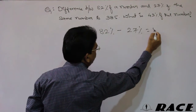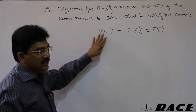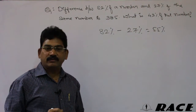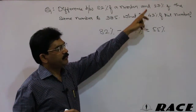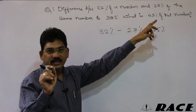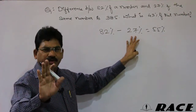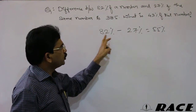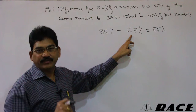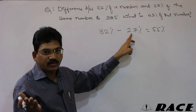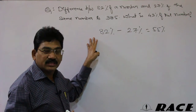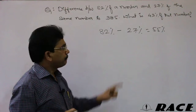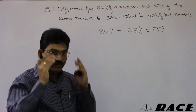In the examination, avoid writing each and every step — it takes too much time. The difference between 82 and 27 should come immediately. A trick: subtracting 27 is difficult, so add 3 to make it 30. Then 82 minus 30 is 52, and since you added 3, add it back to get 55.